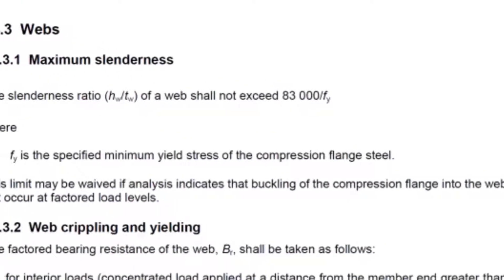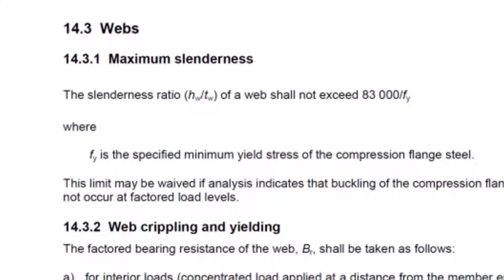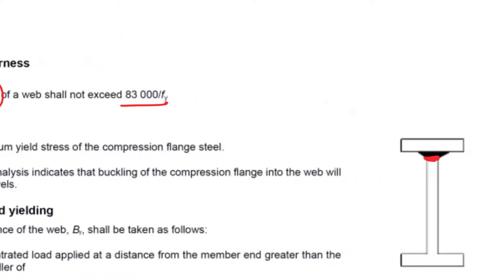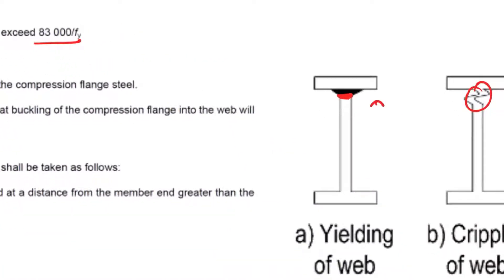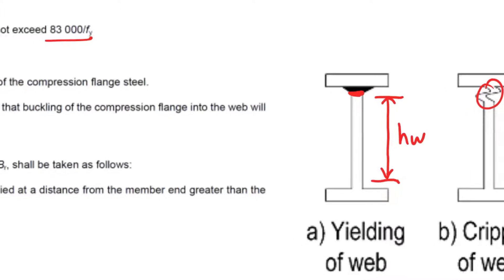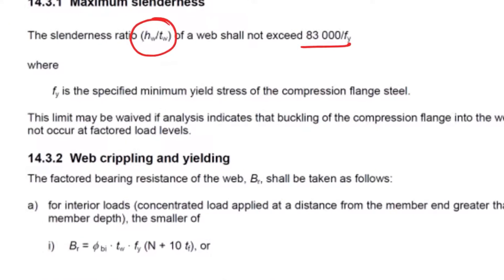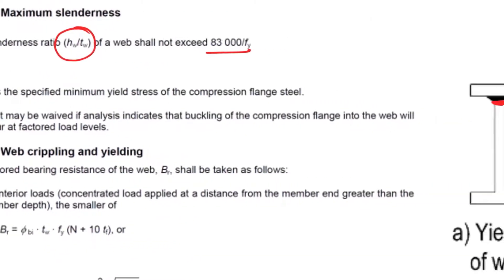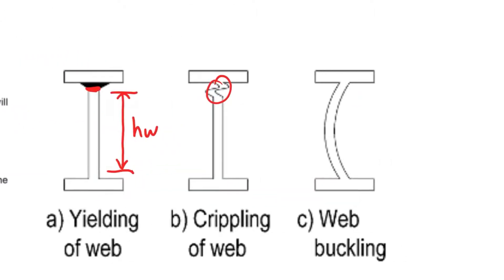We've got equations to describe each of these. Firstly, maximum slenderness: the slenderness ratio of a web shall not exceed 82 divided by the yield stress. This slenderness hw over tw, where hw is from the inside of the radius, shall not exceed 82 divided by yield.